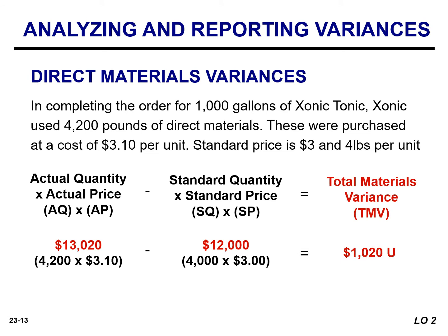The total materials variance is the difference between the amount paid — actual quantity times actual price — and the amount that should have been paid based on standards — standard quantity times standard price of materials. This is unfavorable because actual costs exceed standard costs.